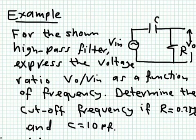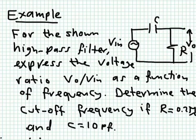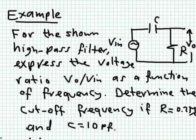Now consider a high-pass filter example. We want to determine the ratio Vout/Vin and the cutoff frequency, given R = 0.2 megaohms and C = 10 picofarads. We call this a high-pass filter because at DC the capacitor is an open circuit and the output is zero, but at very high frequency the capacitor impedance 1/jωC approaches zero — a short circuit — so the output follows the input.